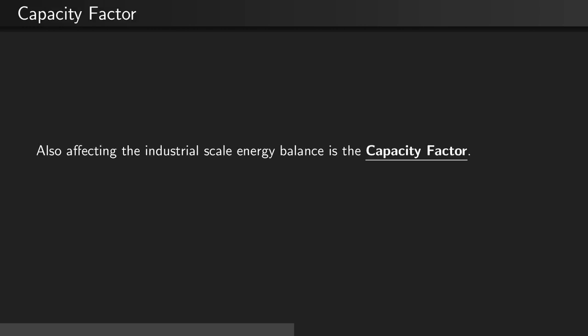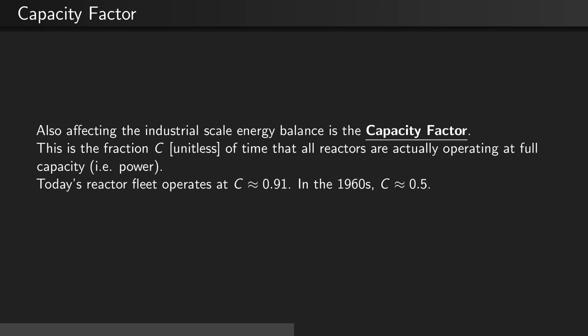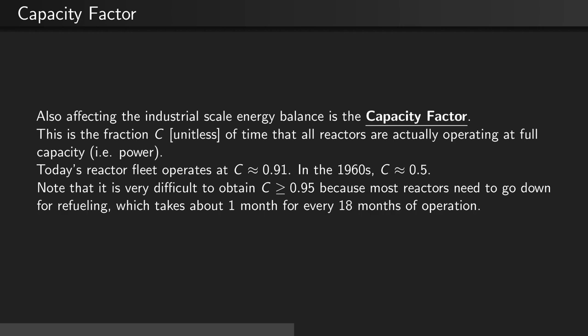Also affecting the industrial scale energy balance is the capacity factor. This is the fraction of time that all reactors are actually operating at full capacity, i.e. power. Today's reactor fleet operates at a capacity factor greater than 90%. In the 1960s, the capacity factor was approximately half. Note that it is very difficult to obtain a capacity factor greater than about 95%, because most reactors need to go down for refueling, which takes approximately one month out of every 18 months of operation.